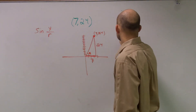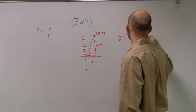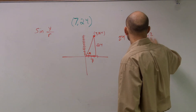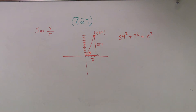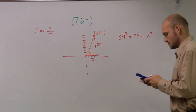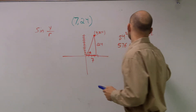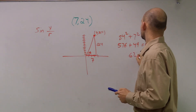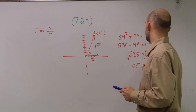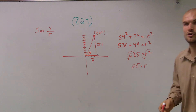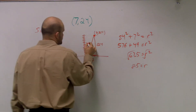I need to find the hypotenuse. So I'll say 24 squared plus 7 squared equals r squared. That gives 576 plus 49 equals r squared, so 625 equals r squared. Taking the square root, I get r equals 25.